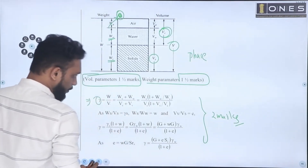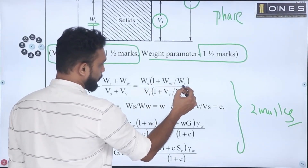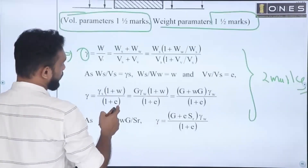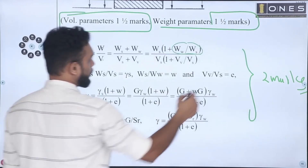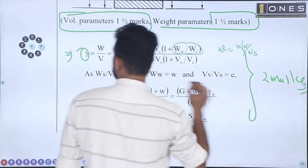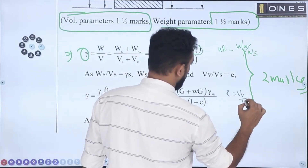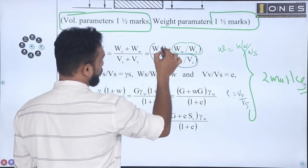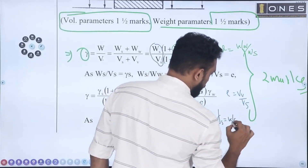If you take Ws out of the numerator, Ws equals 1 plus Ww divided by Ws, over Vs times 1 plus Vv divided by Vs. Water content W is equal to weight of water to weight of solid (Ww/Ws), and void ratio E is equal to volume of voids to volume of solids (Vv/Vs).